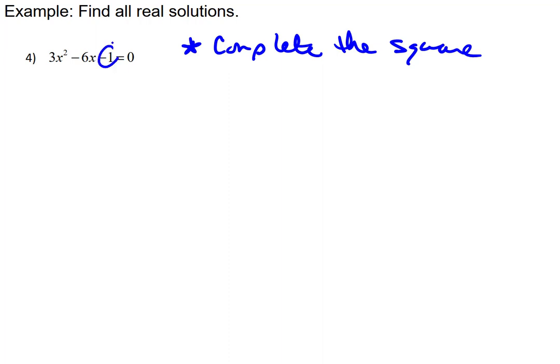And we'll review all the steps, start to finish. The first step is to get the c value, assuming that we are in the ax² + bx + c format. We want c to the other side, so that'll give us 3x² - 6x = 1.